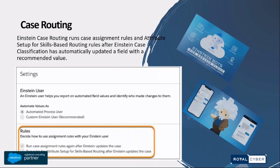Simply put, case routing directs your cases to the best-suited queue or agent. It enables more complex routing than was previously possible because it factors in things like agent skill set, past resolution success rate, and other relevant factors. This precision means a case won't be sent to an agent whose skill set isn't relevant — because that wouldn't result in a successful CSAT score.